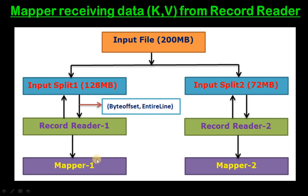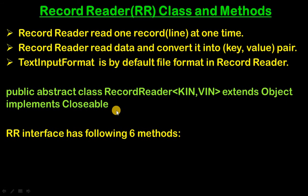The mapper processes the key-value pair and passes it to the reducer. As we know, Record Reader is an interface, so all its methods are abstract. When we write our own Record Reader, we need to implement the Record Reader interface and override all its abstract methods.